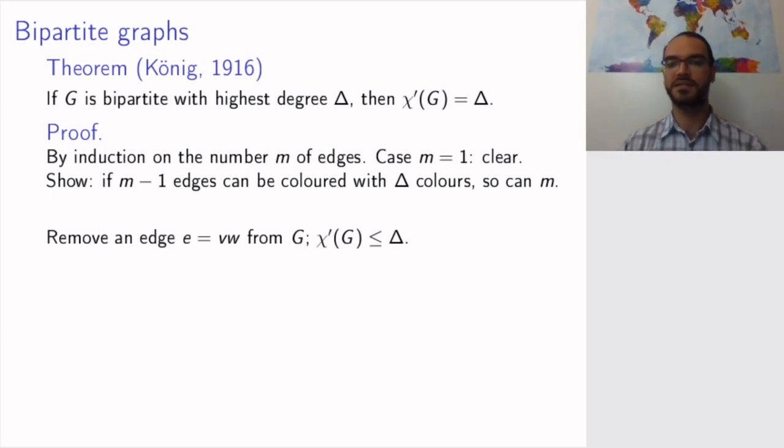Take your bipartite graph and remove an edge vw. So you have your bipartite graph, here you have vertices v and w and an edge e. And if you remove it,